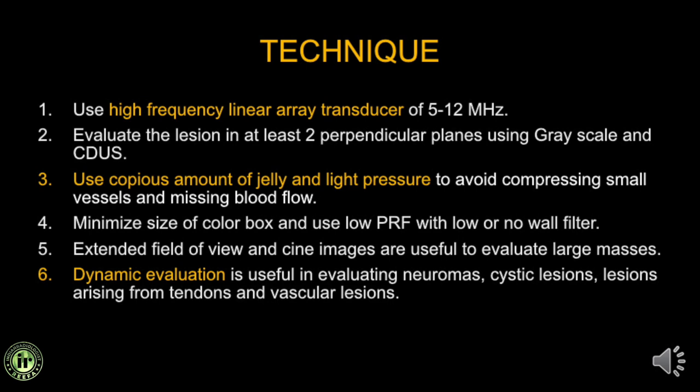When performing high resolution ultrasound of a soft tissue swelling, use a high frequency linear transducer. Evaluate the lesion in at least two perpendicular planes using both grayscale and color Doppler. Use copious amounts of gel and very light pressure to avoid compressing small vessels and missing minimal blood flow. Minimize the color box and use low PRF and low wall filter settings. Techniques like extended field of view or cine images are useful to document large masses and dynamic conditions.